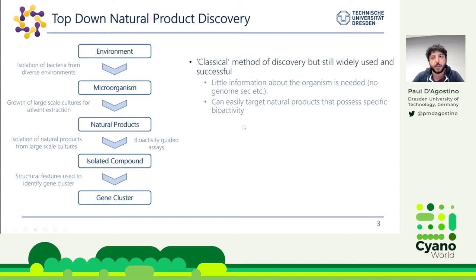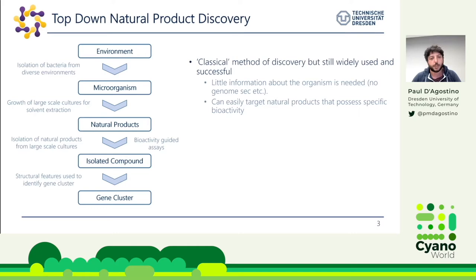The advantage of this method is that you don't need to know a lot about the organism — you don't need a genome, you just need to be able to grow it at large scale. You go out to the environment, collect a sample, isolate the bacteria, grow this up into large-scale cultures, extract all the natural products using solvents, test against a series of bioassays, and then isolate your compound of interest.